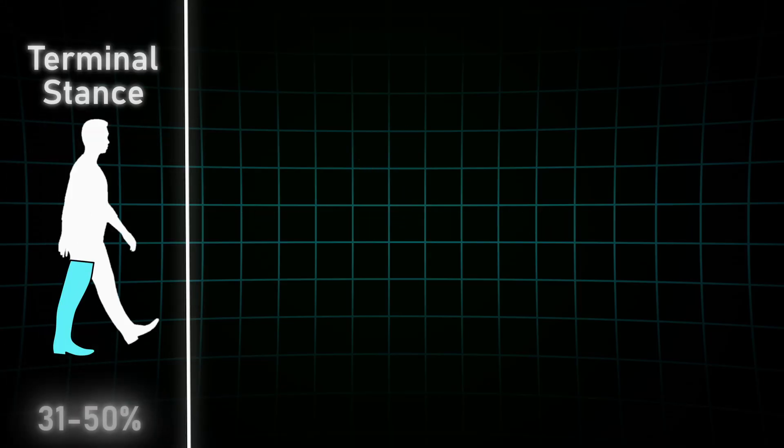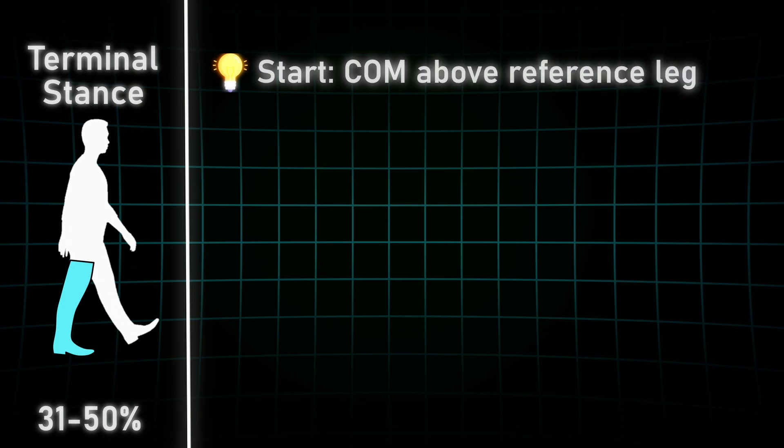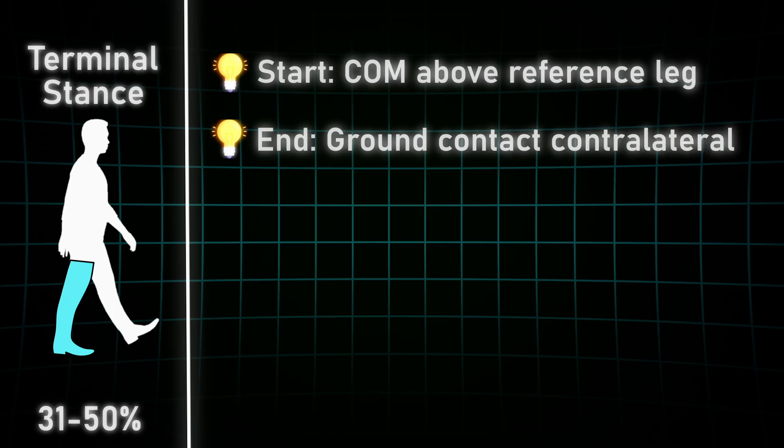And now let's look at the terminal stance phase. It begins where the last phase ended. The center of gravity is above our supporting leg and it ends when the contralateral side has ground contact. The ankle joint is now maximally plantar flexed and pushes us forward.